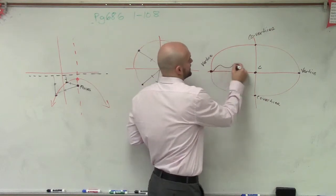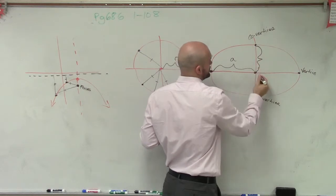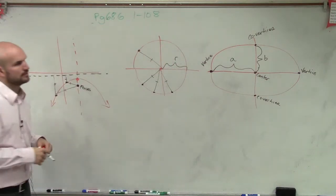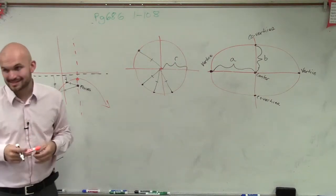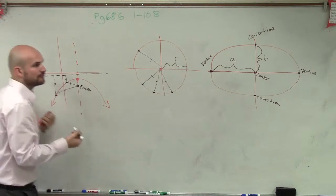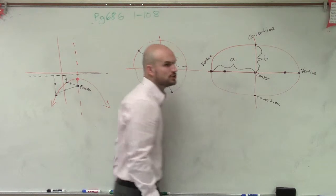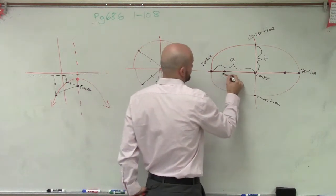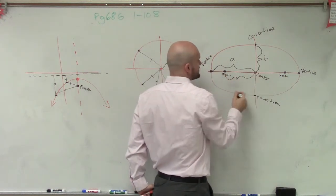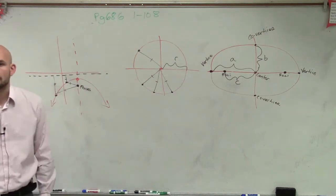The distance from the center to a vertex we'll give a value of a, and the distance from the center to a co-vertex we'll give a value of b. There's one last distance we need to talk about. Going back to the parabola, we had a focus — well, for an ellipse, that focus also takes shape, except there are going to be two of them. These are what we call our foci, and the distance from the center to the foci is c.